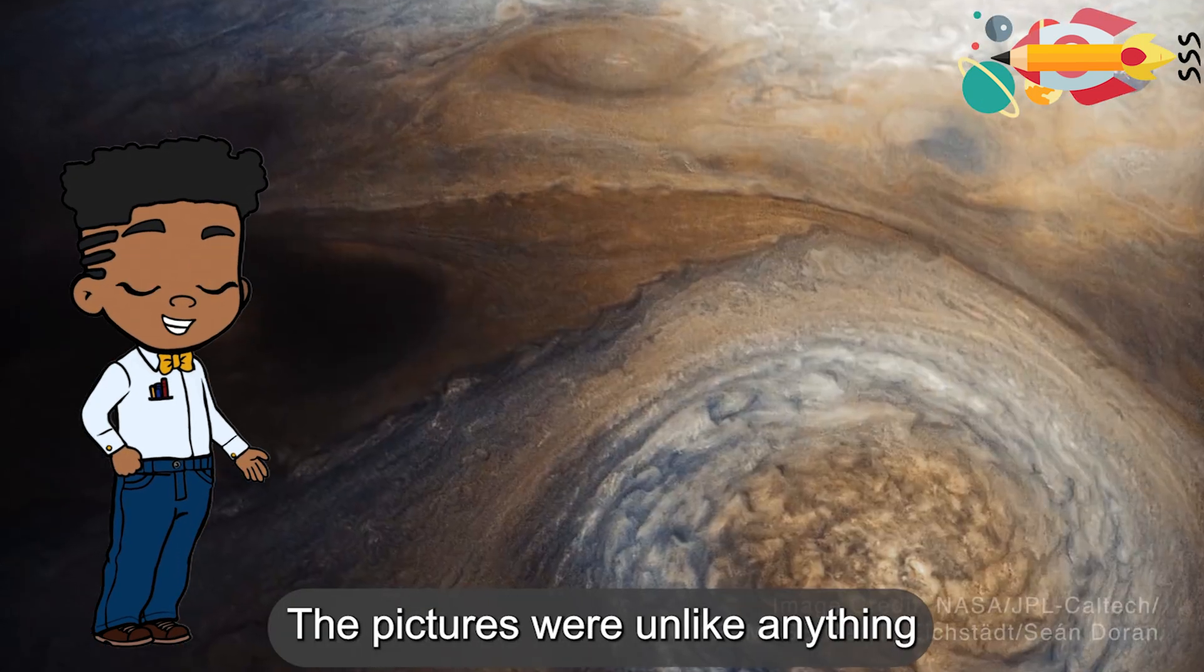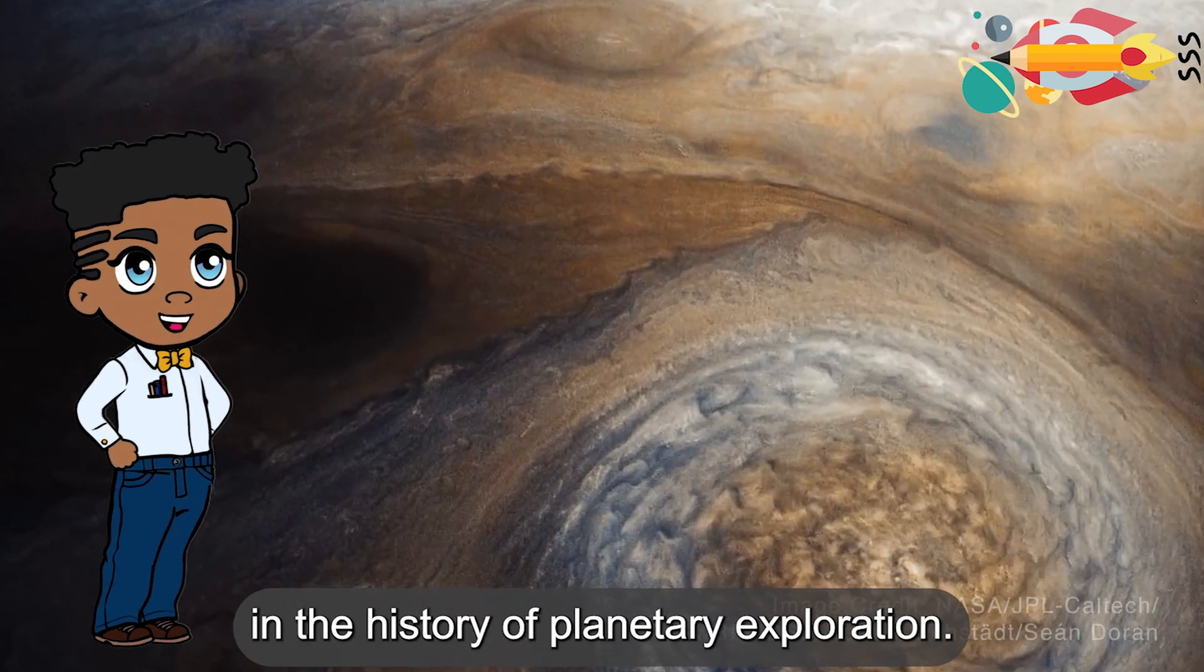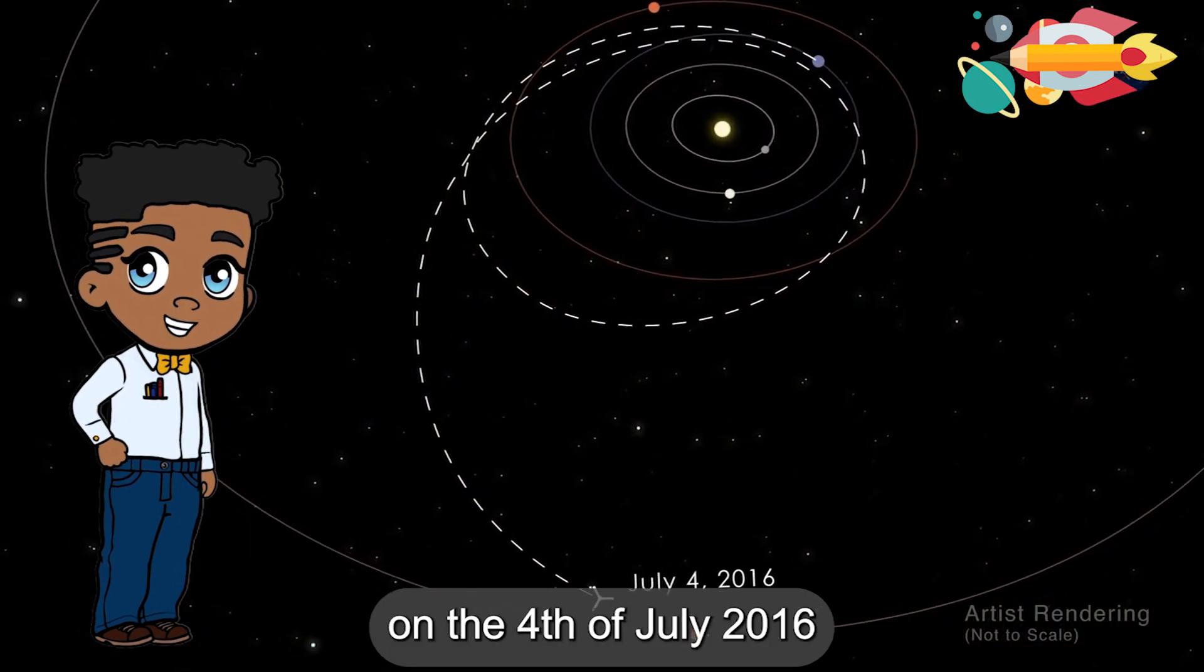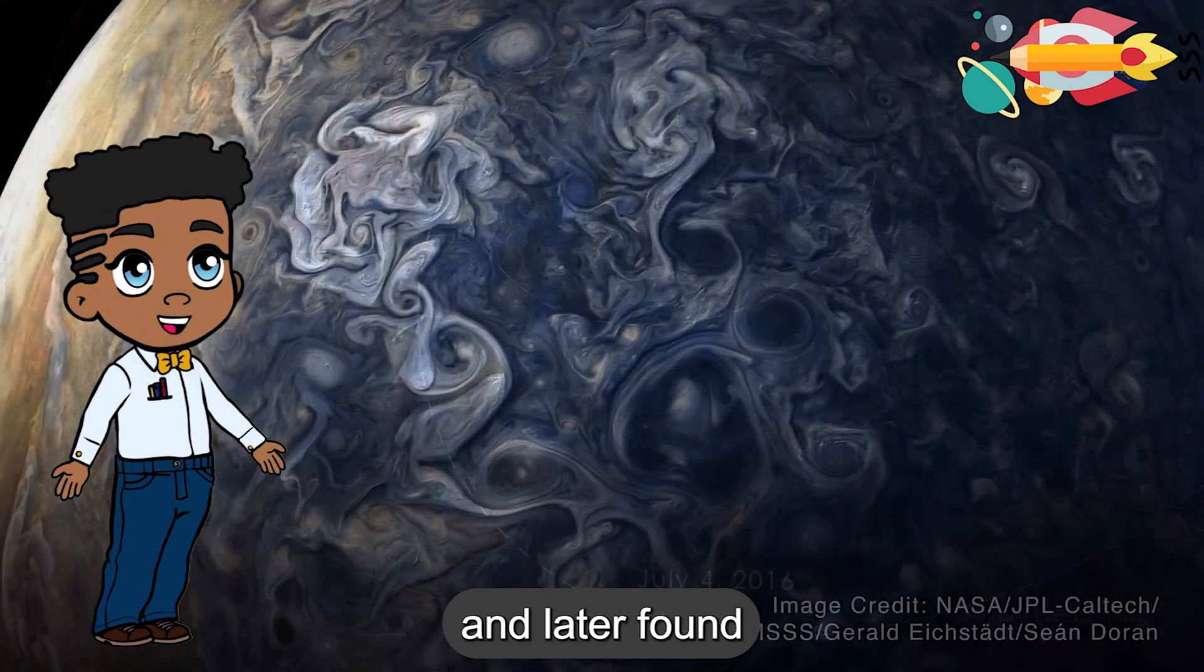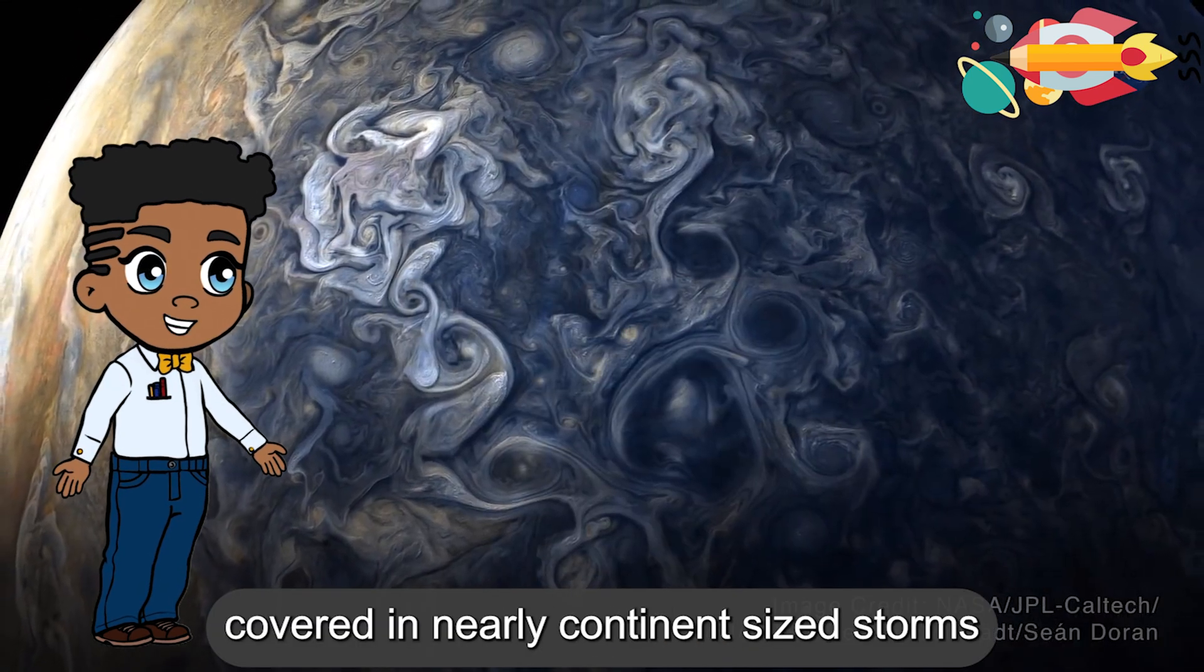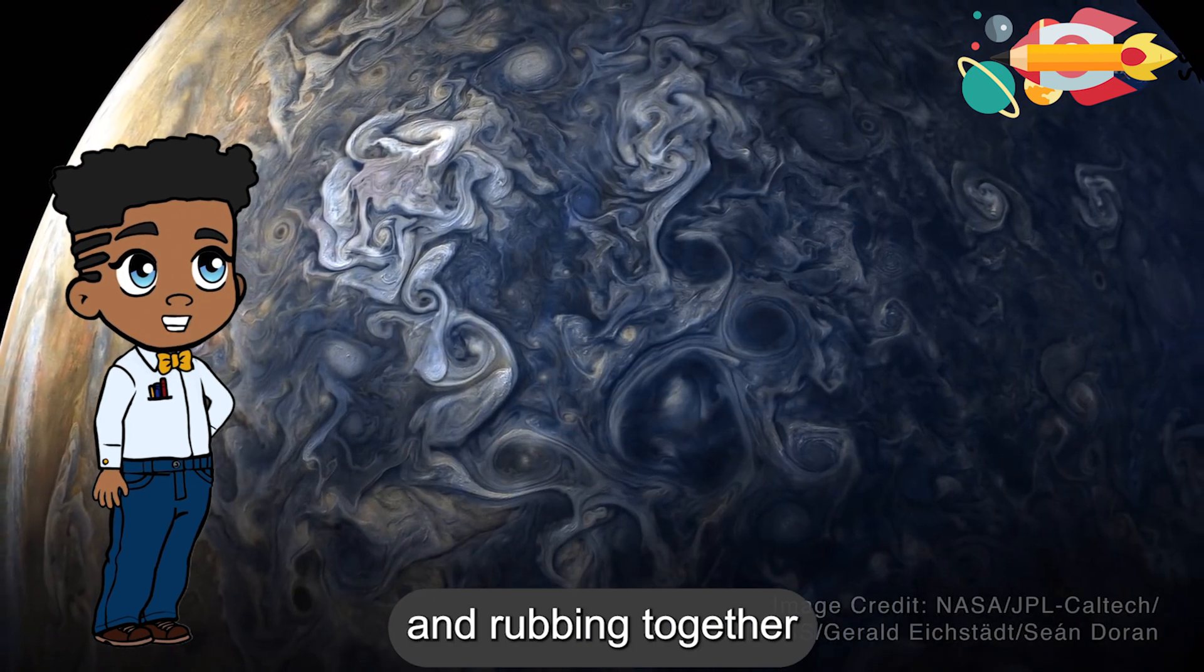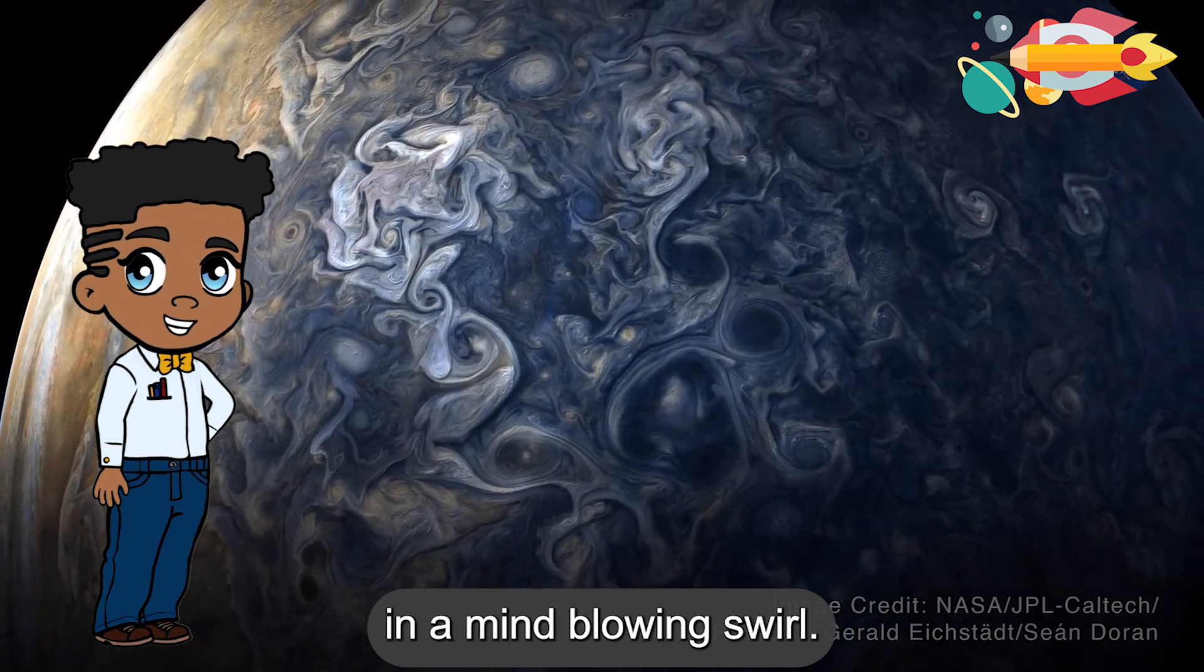The pictures were unlike anything in the history of planetary exploration. Juno entered orbit on the 4th of July, 2016, and later found Jupiter's poles covered in nearly continent-sized storms that are densely clustered and rubbing together in a mind-blowing swirl.